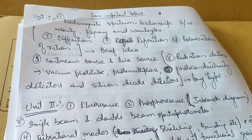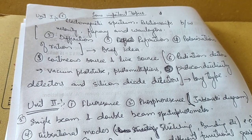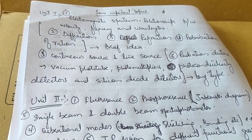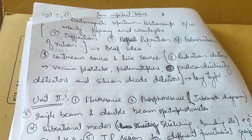For the types of detectors used in instruments like radiation detectors—vacuum, photomultiplier, and silicon diode detectors—prepare this for a long-type question.